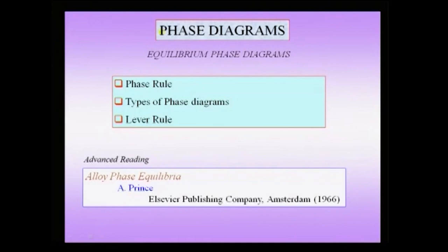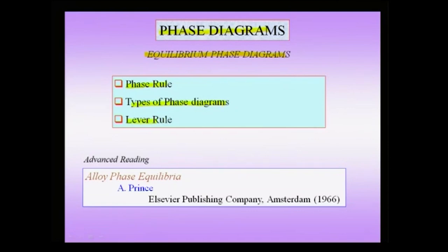We start with the molten pool and this molten pool solidifies. We are in a position to take up the chapter on phase diagrams. Phase diagrams are also called equilibrium phase diagrams. We will discuss this word equilibrium in the context of phase diagrams in the coming slides. In the context of this, we will learn about the phase rule, we will take up some typical phase diagrams, and we will understand how to find out the fraction of the phases formed using the lever rule.